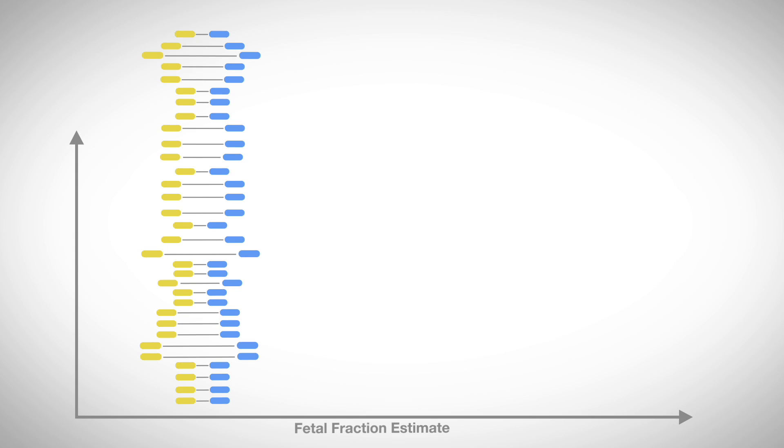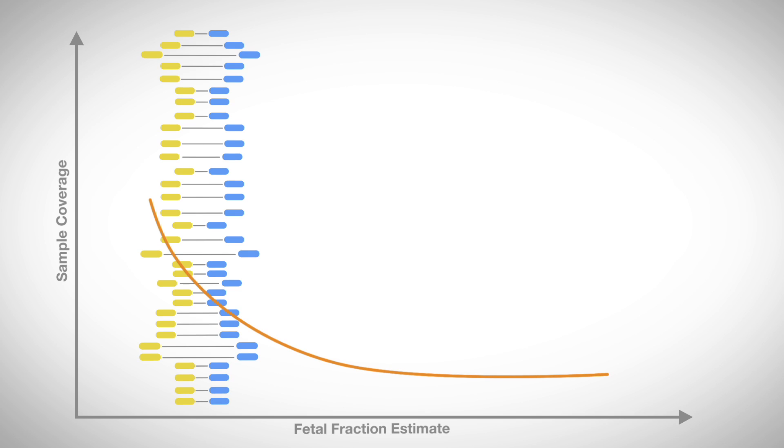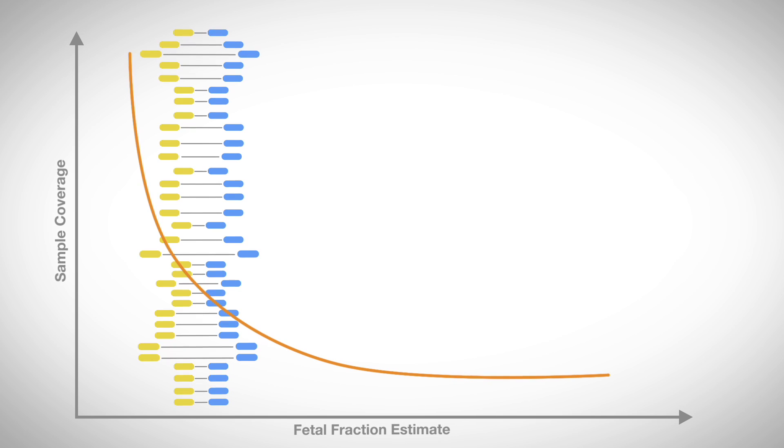Prior to assessing aneuploidy status, quality controls ensure confidence in reported results. One notable metric uses a dynamic threshold for each sample to detect aneuploidy. Those with lower fetal fraction estimates have higher coverage requirements.